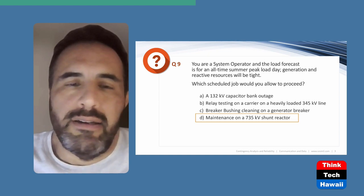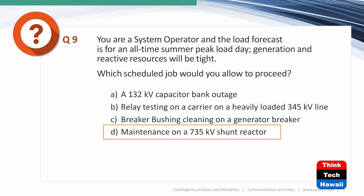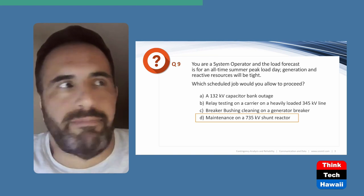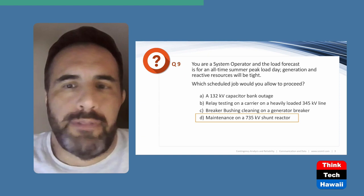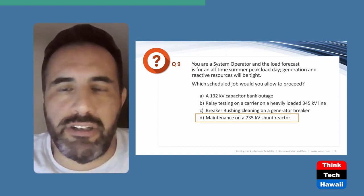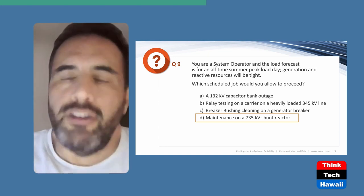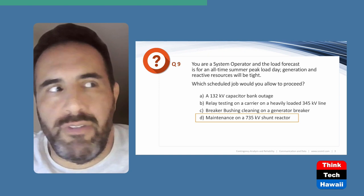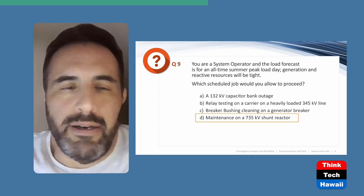Breaker bushing cleaning on a generator breaker — they usually clean breakers with distilled water at high pressure — always carries the risk of contamination, a flashover, and tripping a generator. You could lose a lot of generation in that incident. That's not a good thing when you're already maxed out with generating resources online and serving peak load. C is also not a good answer.